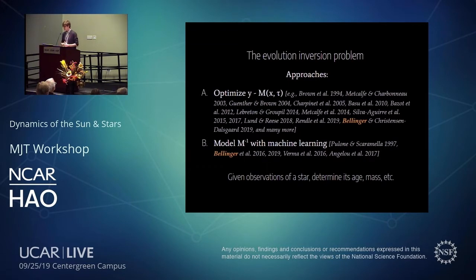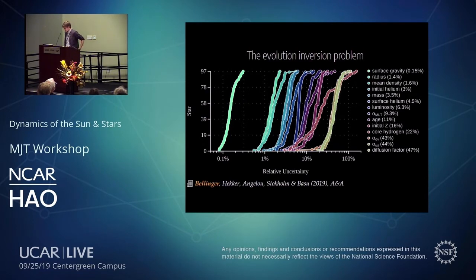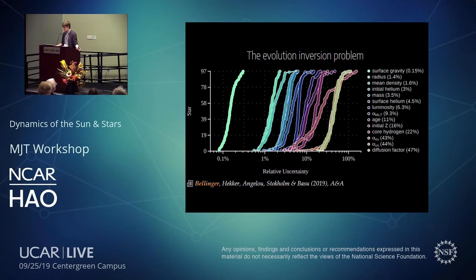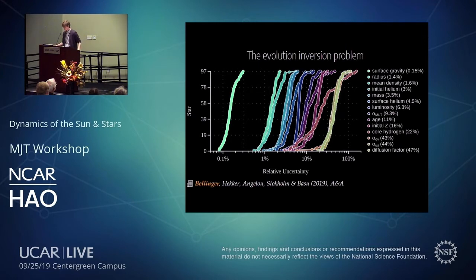Another possibility is to model the inverse operator of stellar evolution theory using machine learning. Since it's an inverse problem this function isn't guaranteed to exist, but we can build approximations. This started in the late 1990s using neural nets based only on the HR diagram, and there's been a revival in recent years using asteroseismic data. The result is something like this: 97 of the best Kepler stars with radii constrained to about 1.5%, masses to 3.5%, ages to 11%.